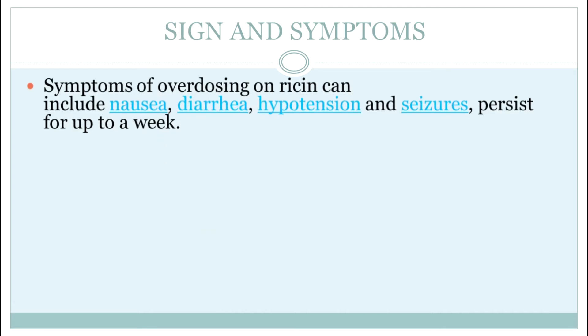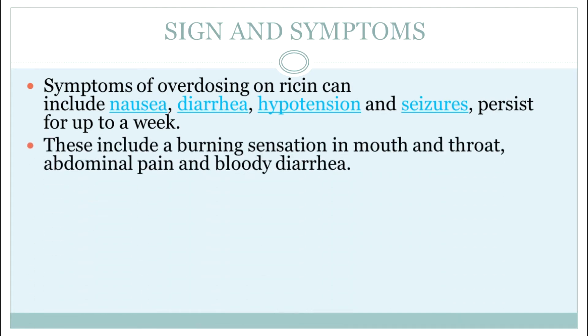If we talk about the signs and symptoms: overdosing of ricin leads to symptoms like nausea, diarrhea, hypotension, and seizures, and these symptoms may persist up to a week. If it is taken orally, there is a burning sensation in the mouth and throat, followed by abdominal pain and bloody diarrhea. These are the symptoms of Ricinus communis poisoning.